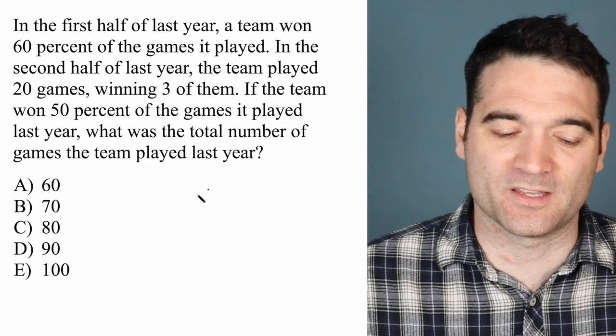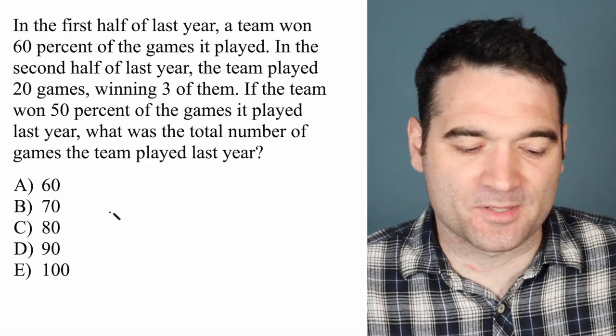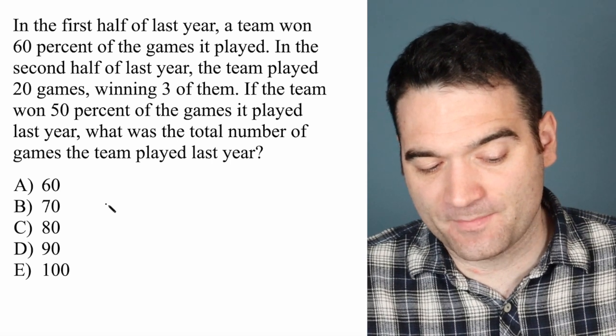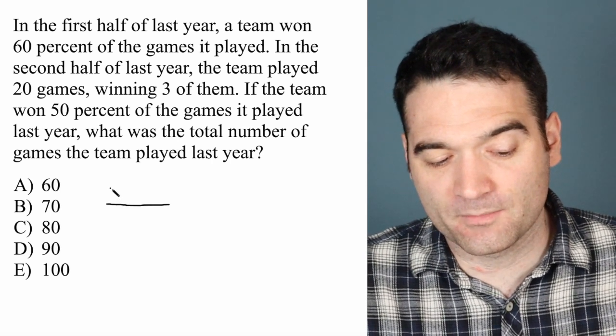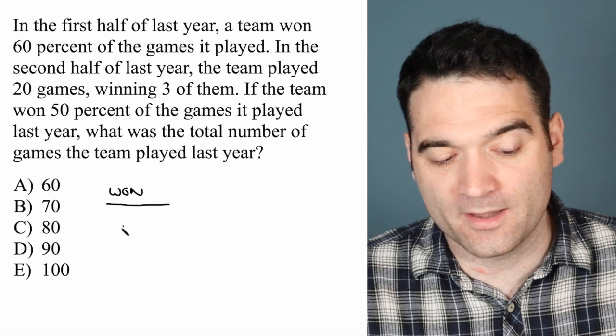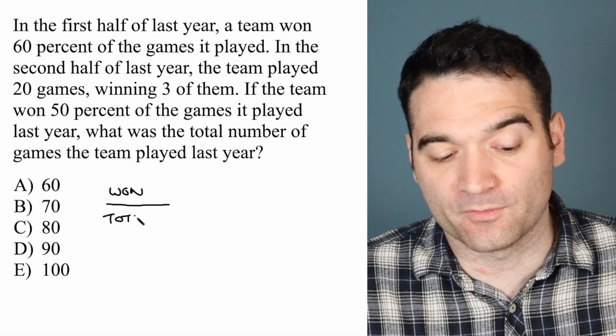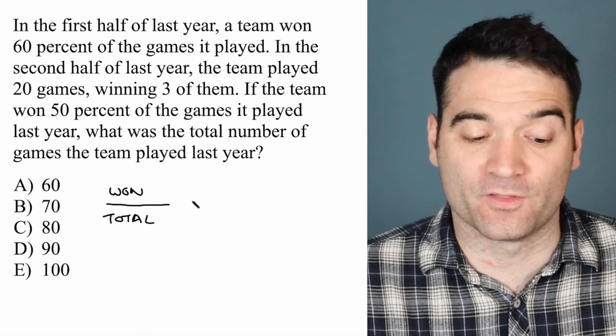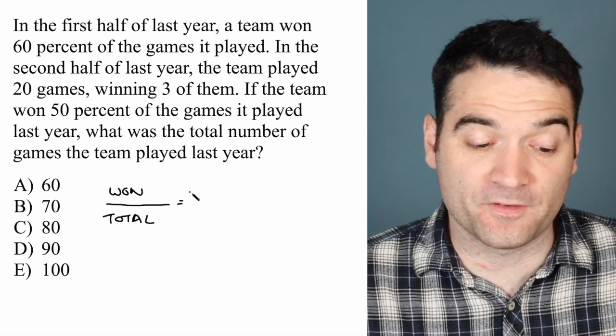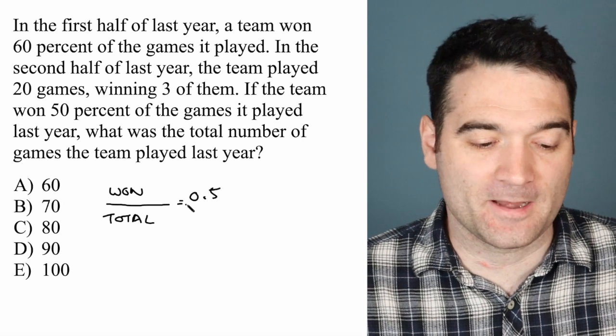I'll walk us through the algebra of this. Here's how to set up this algebraic expression. I'm going to start by saying the total number of games won divided by the total number of games played, so won over total, is equal to 50%, or 0.5.